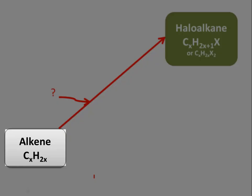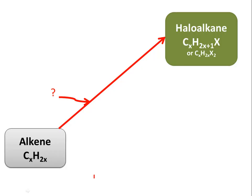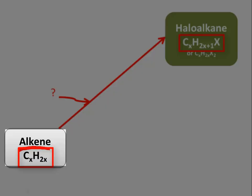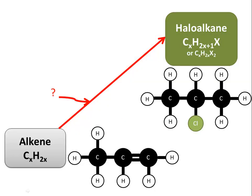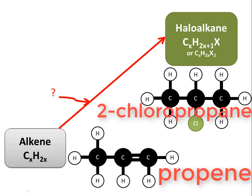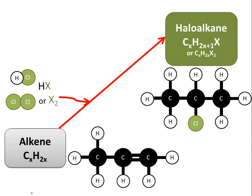What must the alkene react with to be converted into a haloalkane? Looking at the general formulae: alkene is CₓH₂ₓ, while the haloalkane has an additional H and an X. The alkene needs its double bond broken and replaced with a single bond, with H and Cl added, so it must react with HX or X₂.